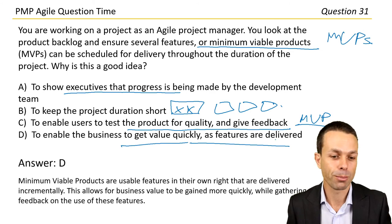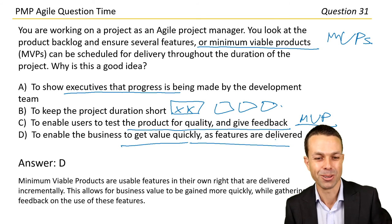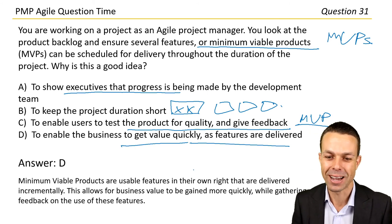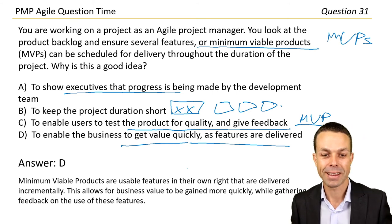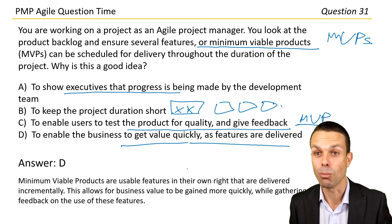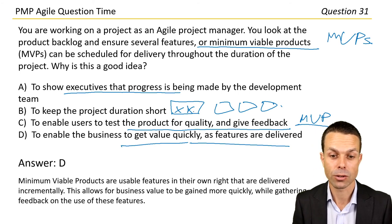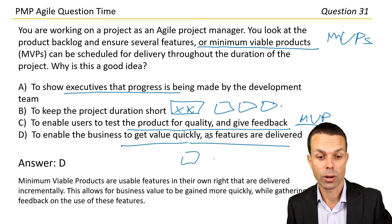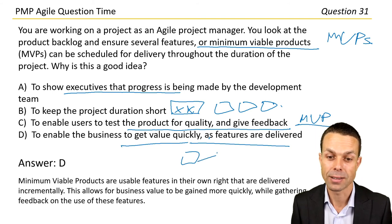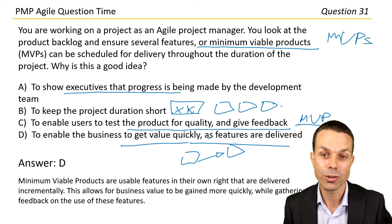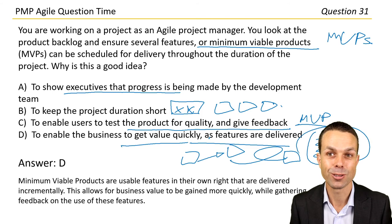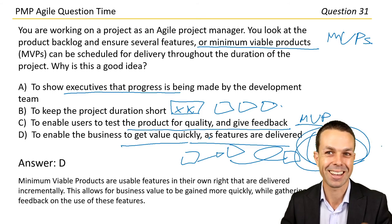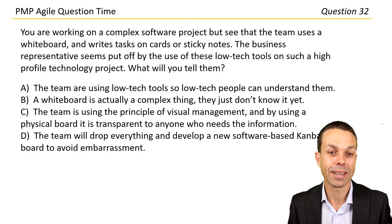Answer D: minimum viable products are usable features in their own right, delivered incrementally. This allows business value to be gained more quickly. It also enables gathering feedback — are these features having the desired results? And it may prompt reprioritization of features with the product owner. This really gets into the agile way of working.